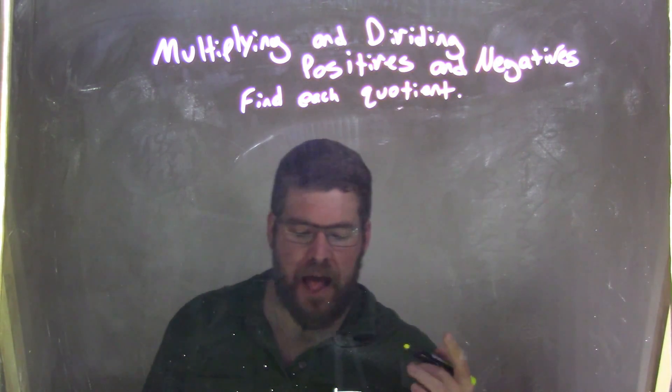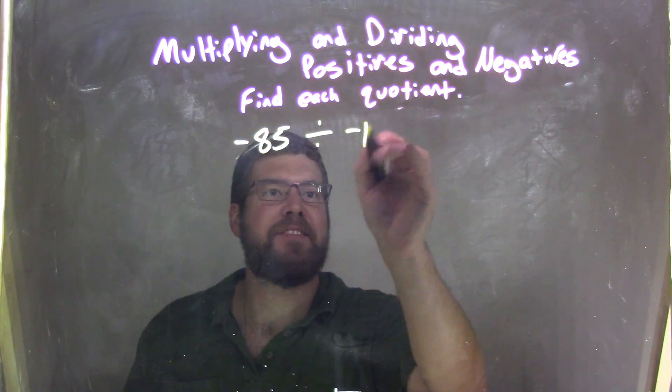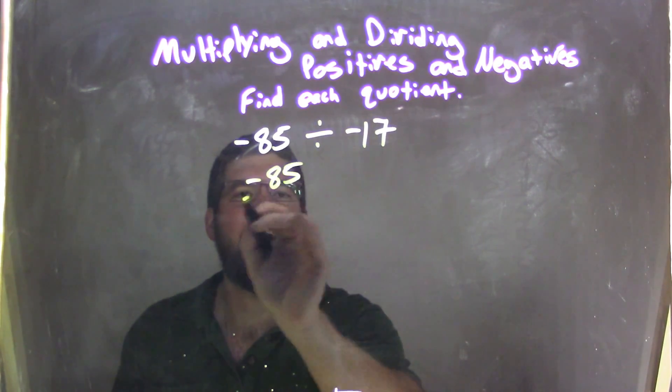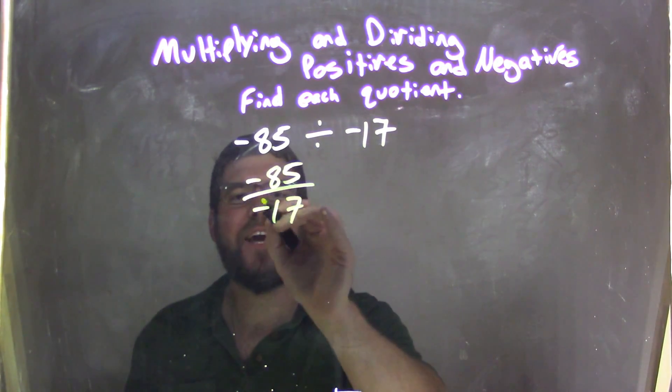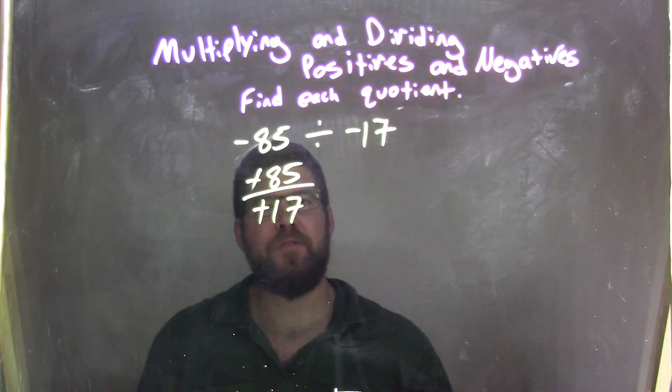So if I was given this quotient, negative 85 divided by negative 17, I like to see it as a fraction: negative 85 over negative 17. Negatives cancel, become positive, I'm done with them, I'm not going to deal with it. So now we have 85 and 17.